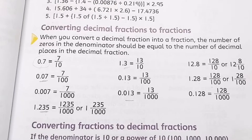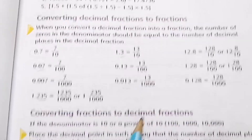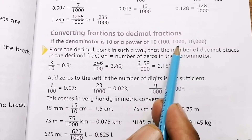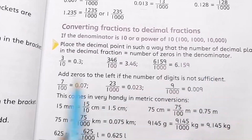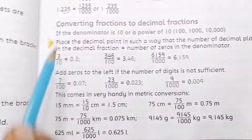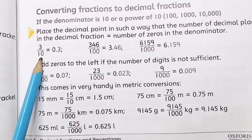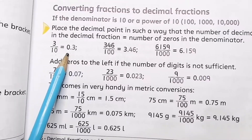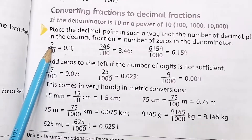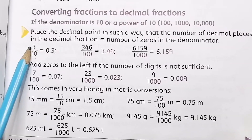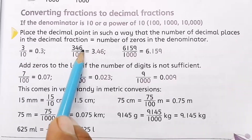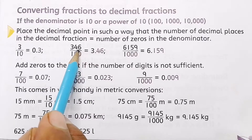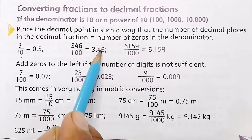Next is converting fractions to decimal fractions. If the denominator is 10 or a power of 10 — such as 100, 1000, or 10,000 — this process is the opposite of before. For 3/10, there is one zero, so you place the decimal after one digit: 0.3. For 346/100, counting from the right side, you place the decimal after two digits: 3.46.